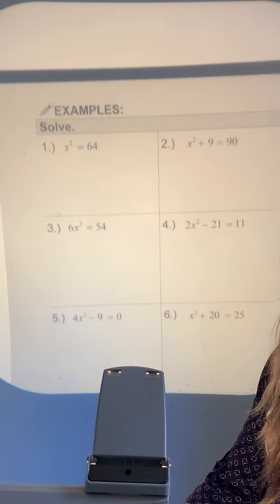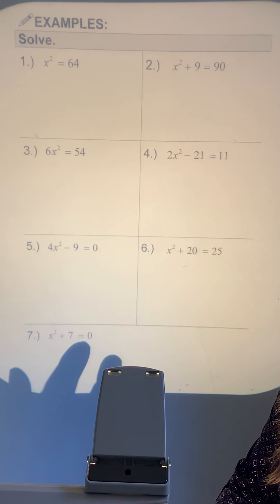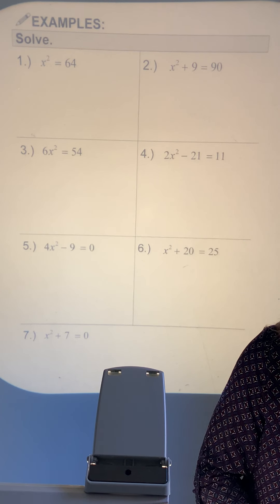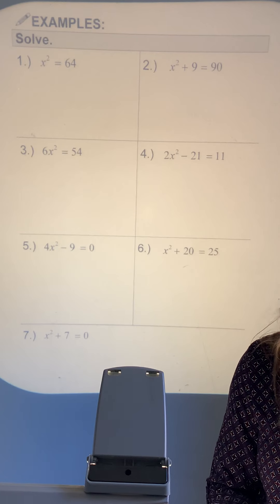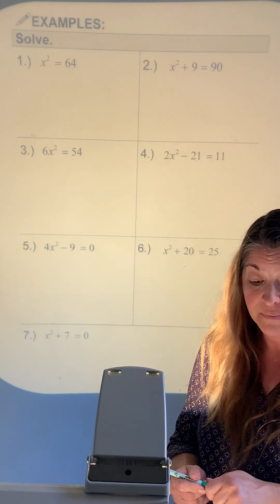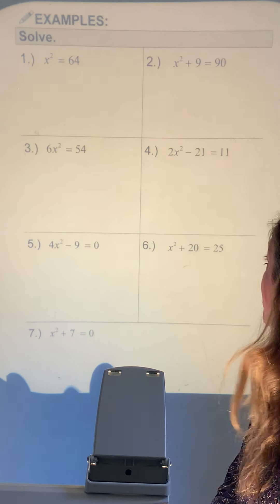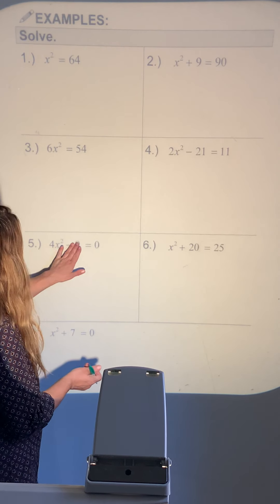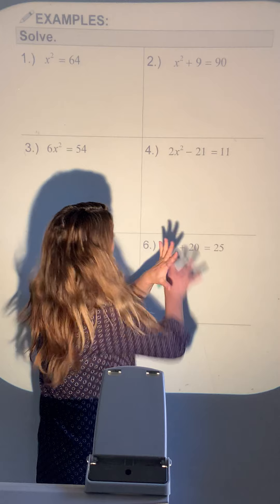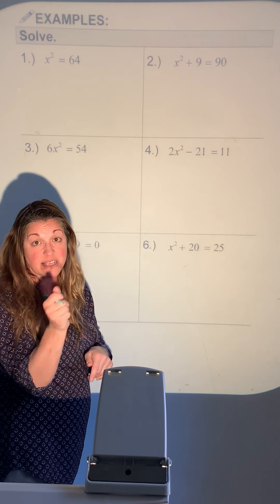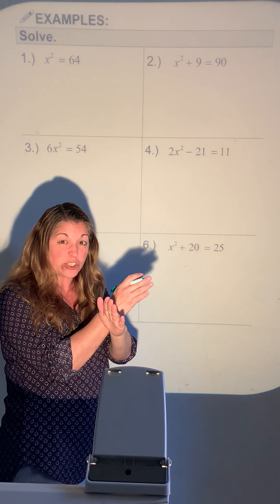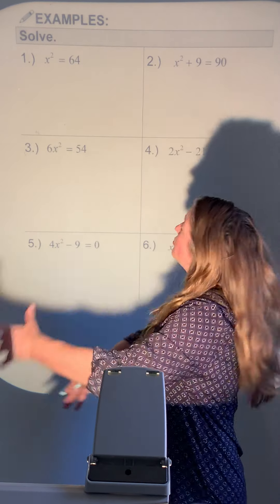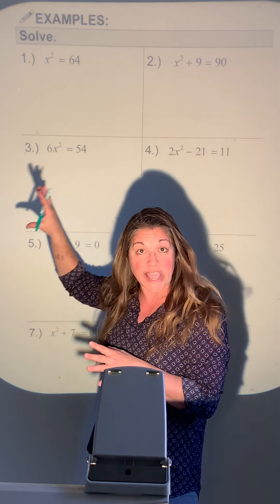Now moving on to examples. The examples have the pencil symbol — write them all down so you have what you need for homework and the quiz. All of these are just to solve. They all have a term with x squared and a constant, but none of them have just an x. That's super important — if there were a lone x term, we couldn't use this method.